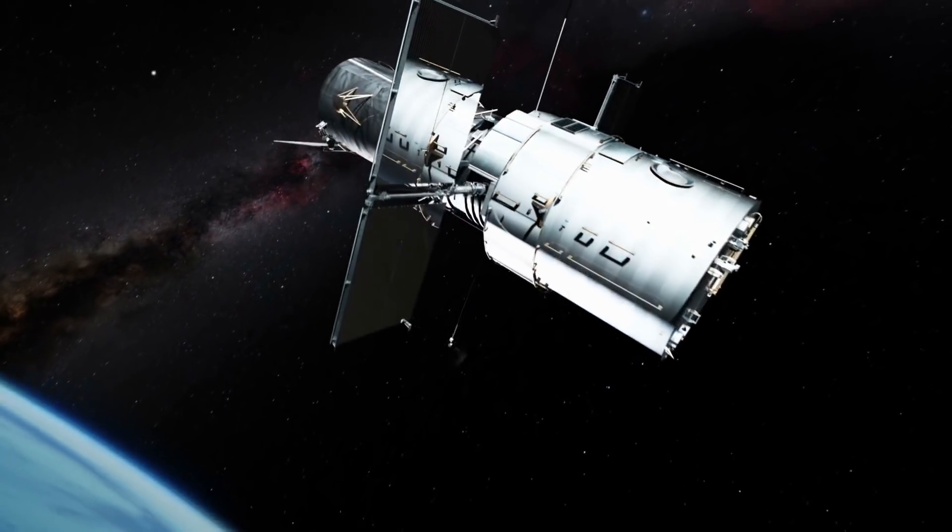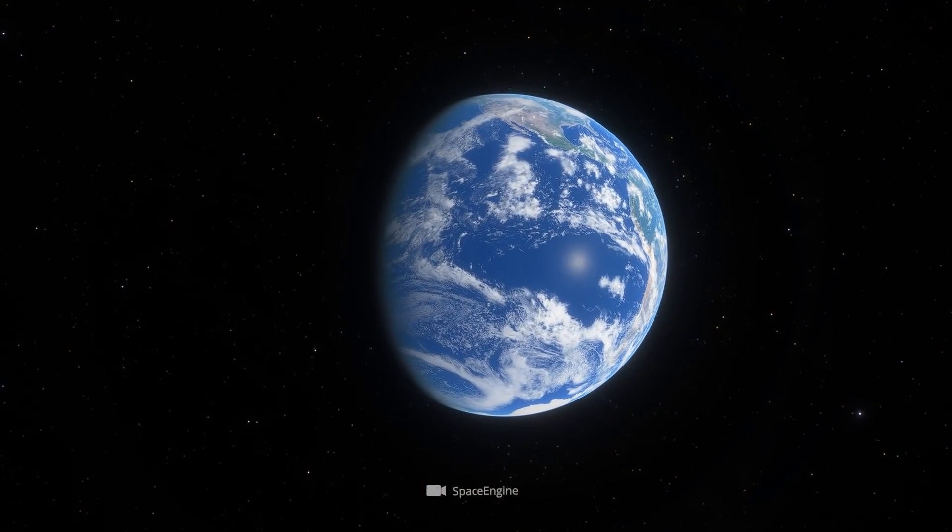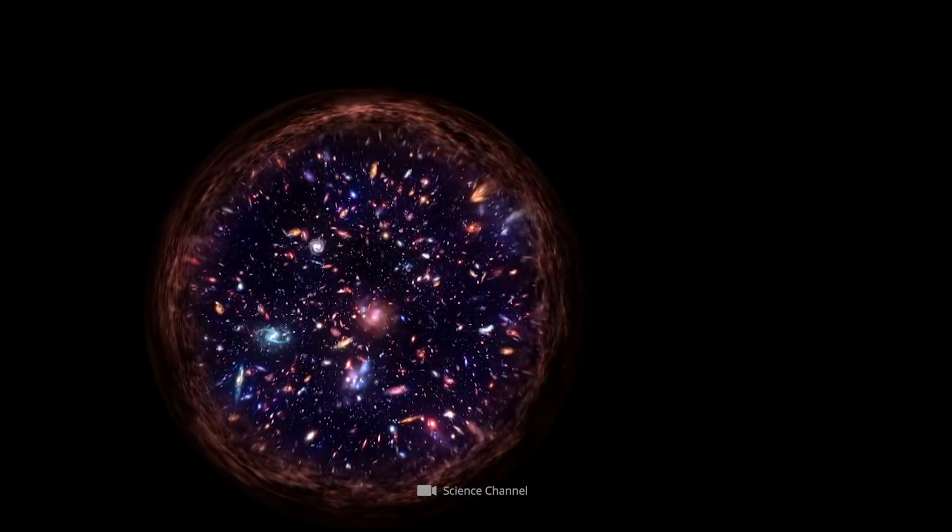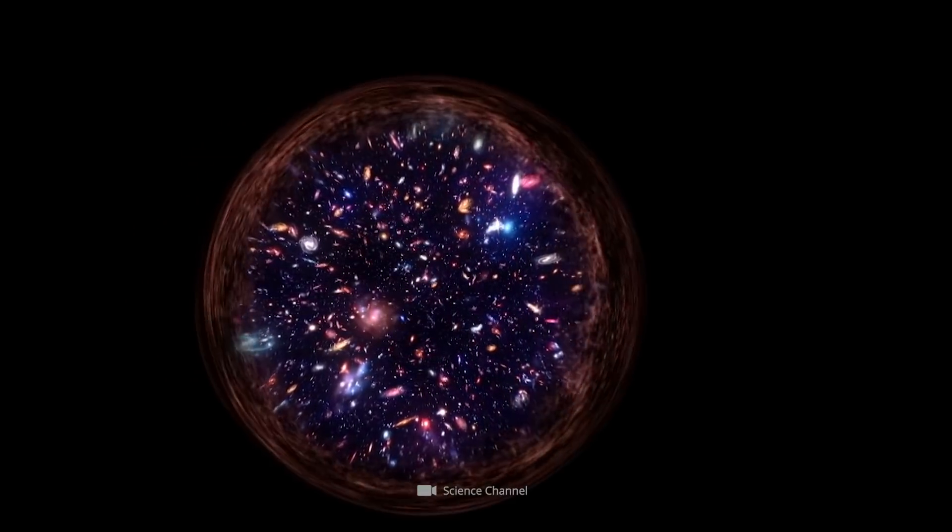Within the model of the observable universe, our Earth forms the center of a sphere. The sphere surrounding our blue home planet corresponds to that region of the universe which we can see from our point of view.